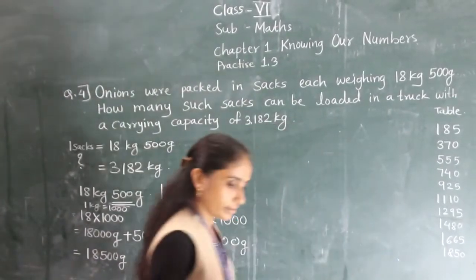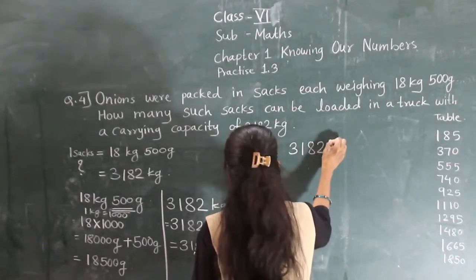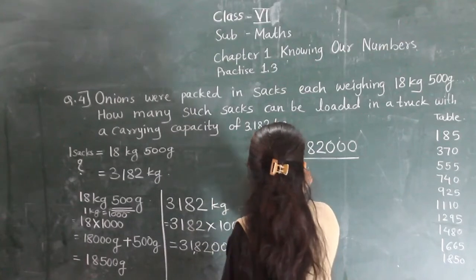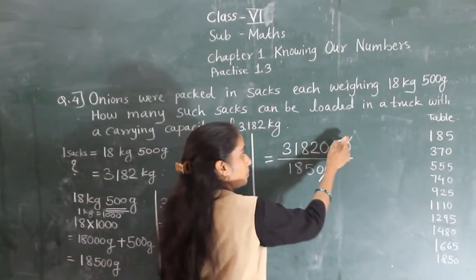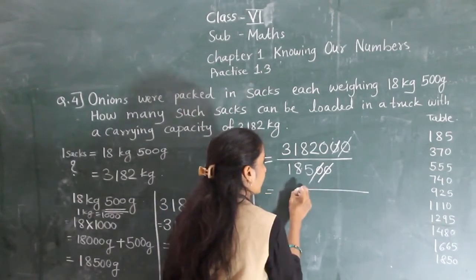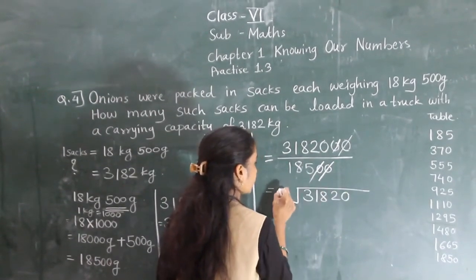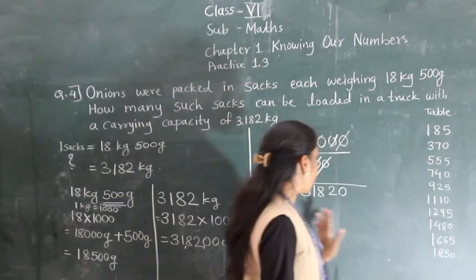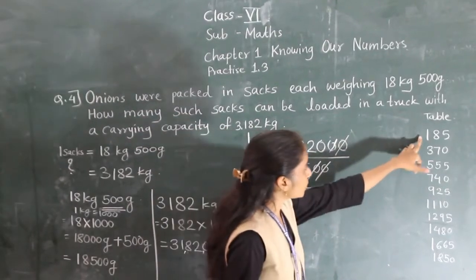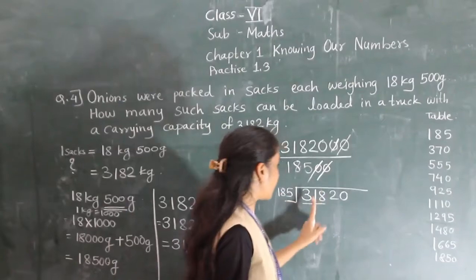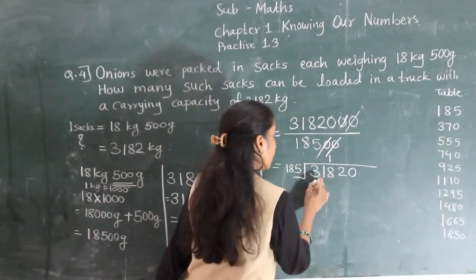Now we are going to divide. We cancel two zeros from both numbers — 3,182,000 divided by 18,500 becomes 31,820 divided by 185. Now we check: 185 ones are 185. We look at the first few digits of the dividend to find our quotient digit.